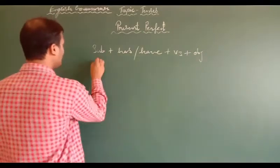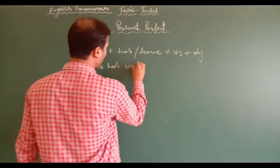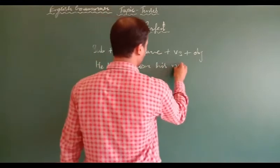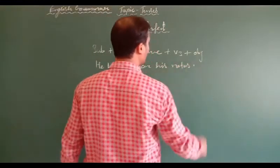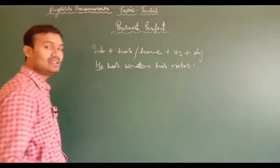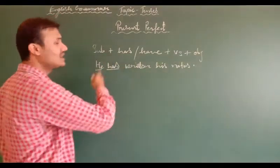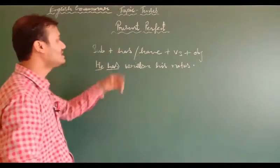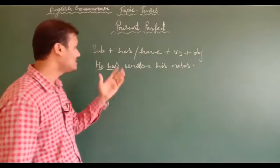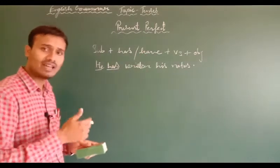Let's see an example. If I write: 'He has written his notes.' What you are observing? 'He' is the subject. What is 'has'? Has is a helping verb. Here in present perfect tense, we use has or have as an auxiliary verb. This is the helping verb.